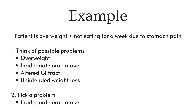Let's do an example. A patient is overweight, they have not been eating for a week due to stomach pain, and they just got admitted to the hospital. Possible problems include overweight, inadequate oral intake, possibly an altered GI tract, and unintended weight loss noted on their chart. We're going to pick inadequate oral intake because that's what we're probably going to treat. Inadequate oral intake is going to be the best diagnosis right now, since the goal is to get them eating again.